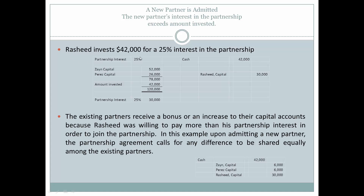In this scenario, Rashid invests $42,000 for a 25% interest. The existing partners' capital balances total $78,000. With Rashid's $42,000 investment, the partnership is now worth $120,000. 25% of $120,000 is $30,000, so Rashid's capital balance is valued at $30,000, while the cash invested is $42,000 — creating a $12,000 difference that must be allocated.